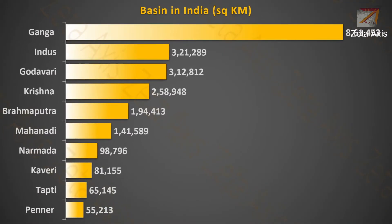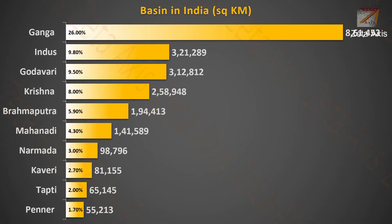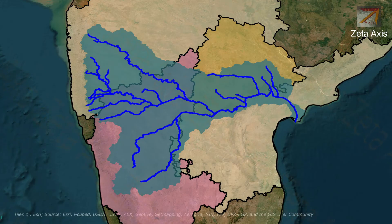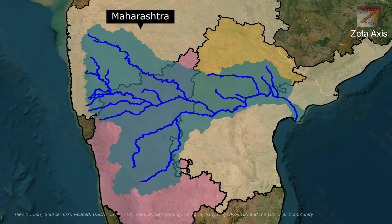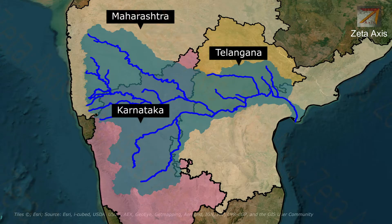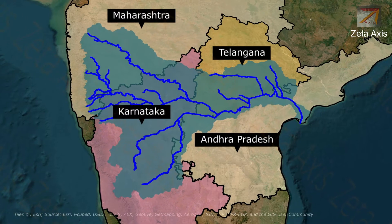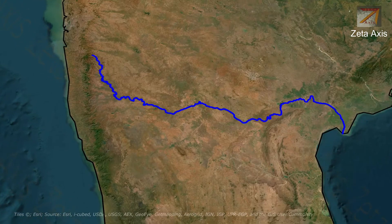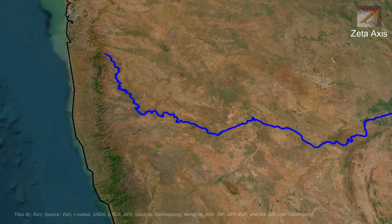However, within Indian territory, the Krishna River Basin is the 4th largest river basin. It is spread across Maharashtra, Karnataka, Telangana and Andhra Pradesh. Now let's discuss the course of Krishna River.